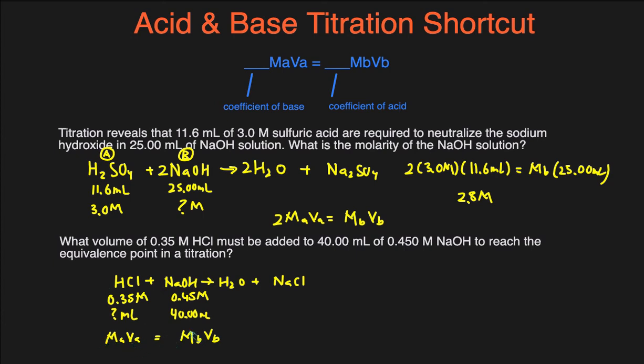Then we just plug in the numbers. So Ma is 0.35 molar. The volume of the acid is what we're trying to solve for. The molarity of the base is 0.45 molar. And the volume of the base is 40.00 milliliters. Then we just plug that into the calculator to solve for Va, so 0.45 times 40 divided by 0.35. And so the volume of the acid will be 51 milliliters. And that's the answer. That's how much acid is needed to reach the equivalence point.